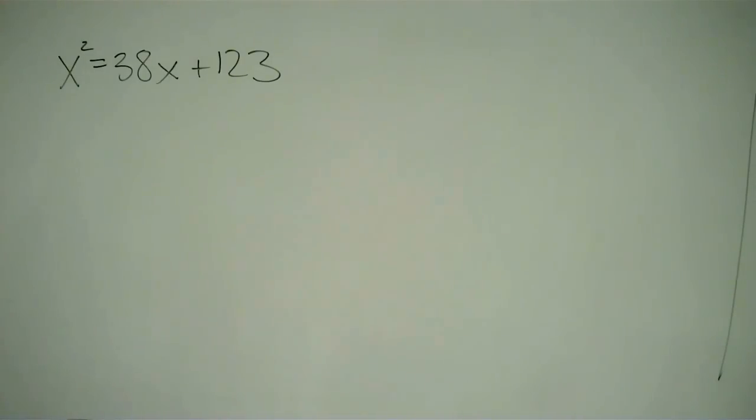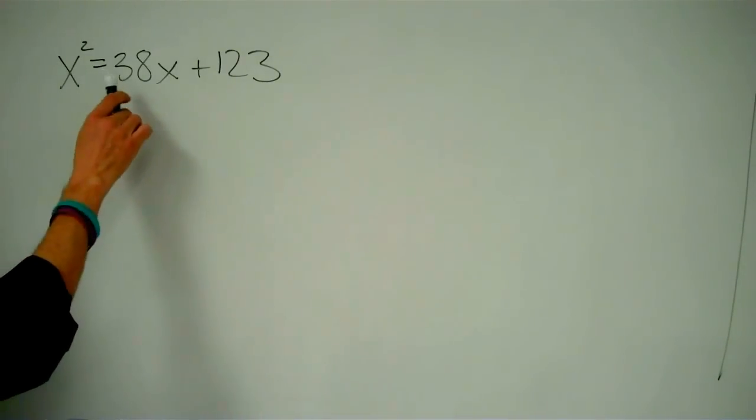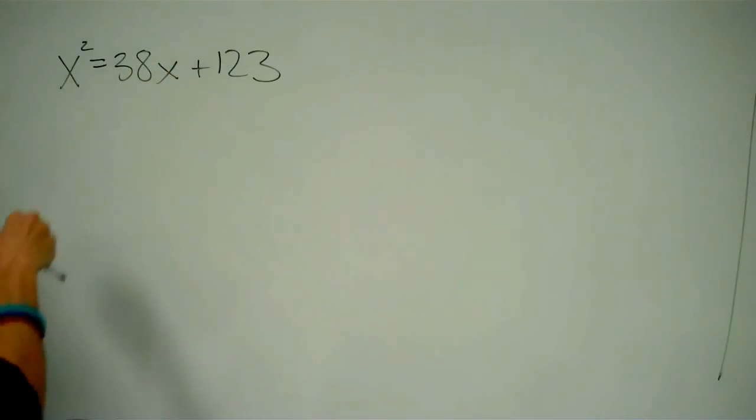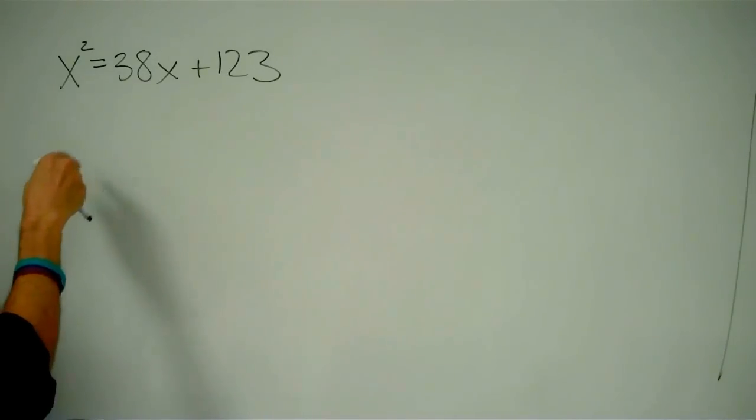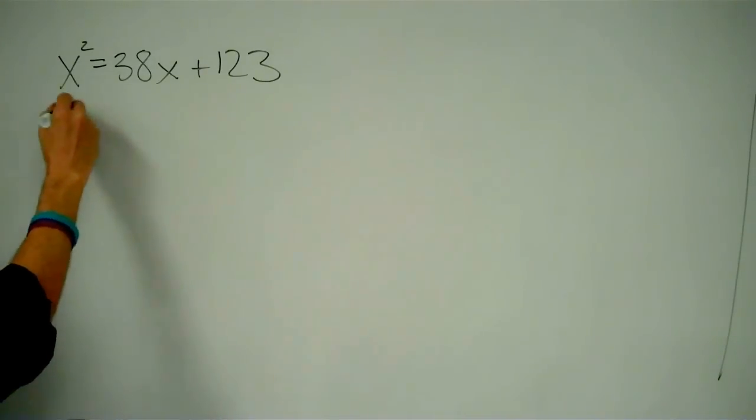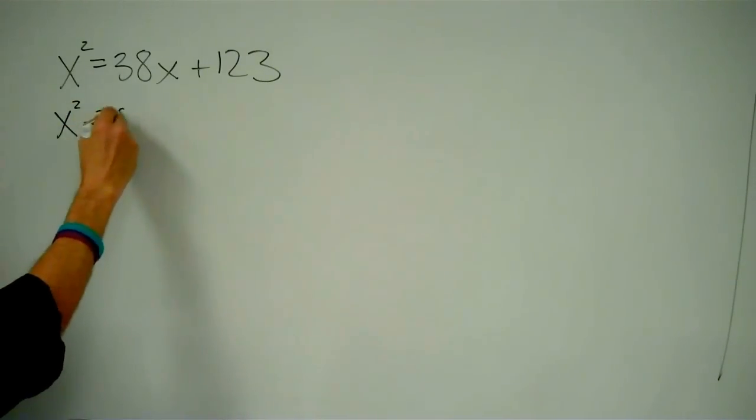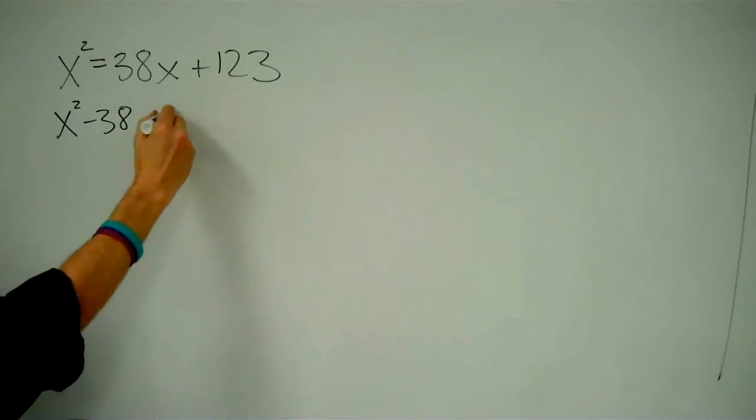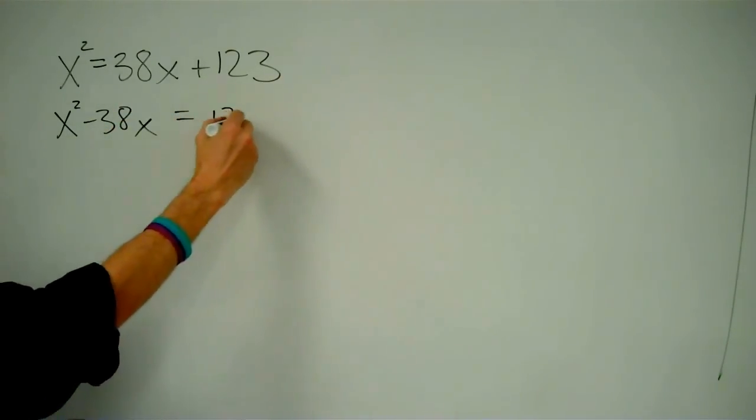So step one: let's get our x's on the left and our constant on the right. We'll do this by subtracting 38x from both sides of our equation. On our left we get x squared minus 38x, and on the right we have 123.